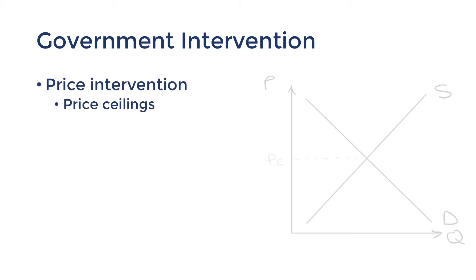Price ceilings are when the government places an upper price limit below the market equilibrium. Imagine a little man representing the price of the good — he's trying to reach equilibrium and the ceiling is there to stop him. A common mistake is to put the ceiling above the equilibrium, but that's just redundant because he wouldn't get any higher than equilibrium anyway. So price ceilings are an upper limit on price that sits below the equilibrium price.